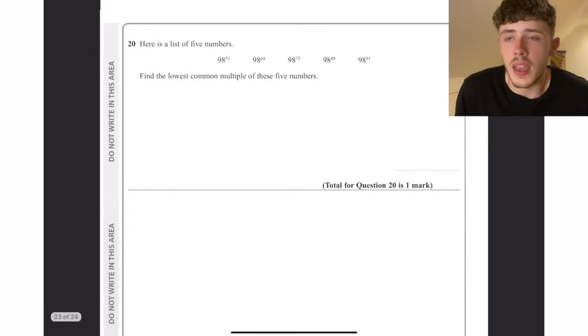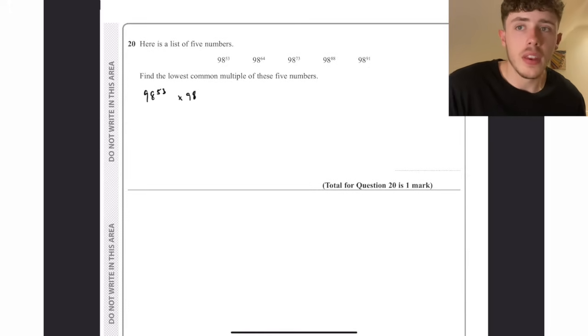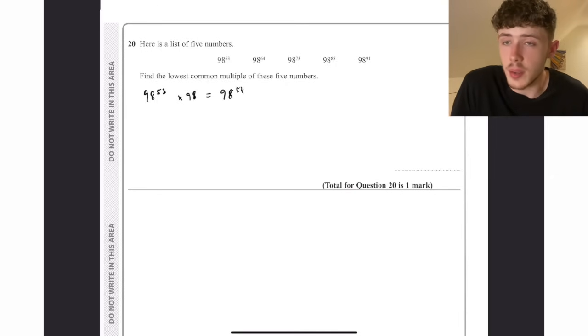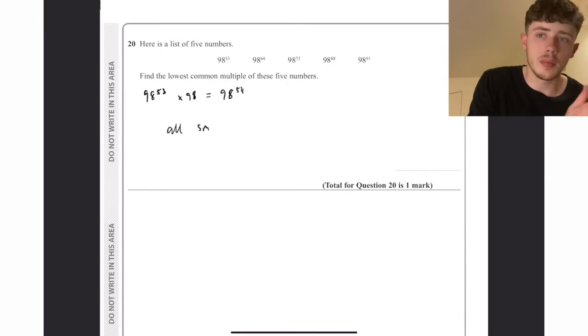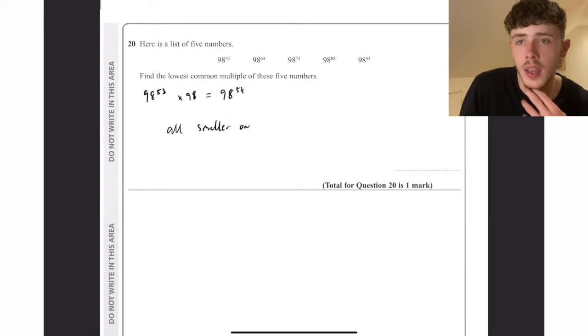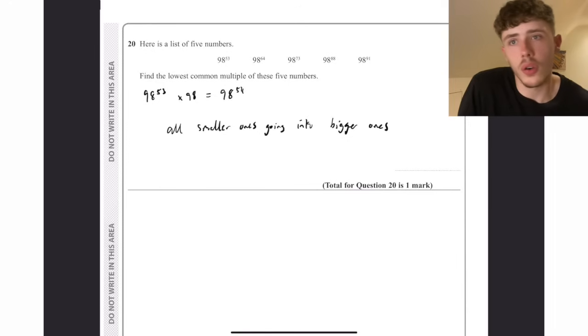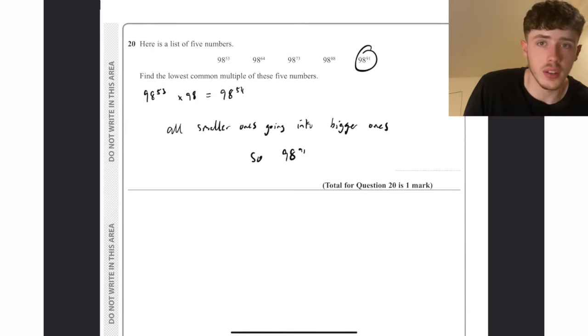Question number 20. Here is a list of five numbers, find the lowest common multiple of these five numbers. Because they are all in the 98 times table technically, because it's just 98 times 98 times 98 basically, and so on, the lowest common multiple has to be the biggest one out of all of them, because 98 to the 91 is not going to fit into 98 to the 53, but 98 to the 53 will fit into 98 to the 91, so that has to be the lowest common multiple.